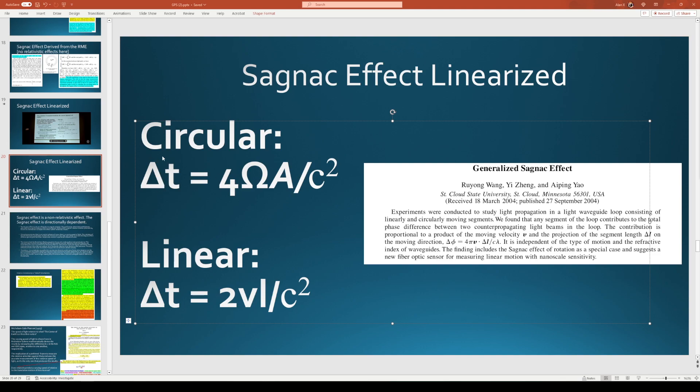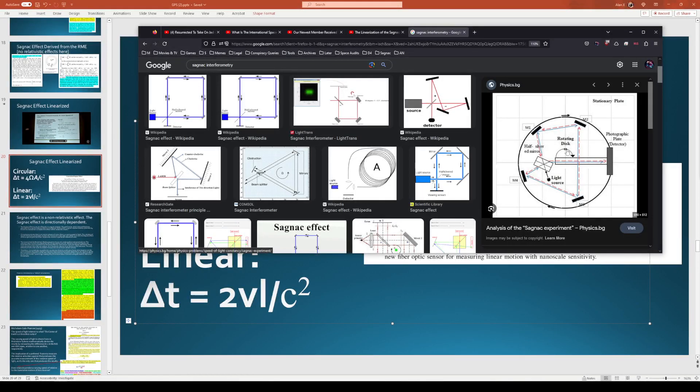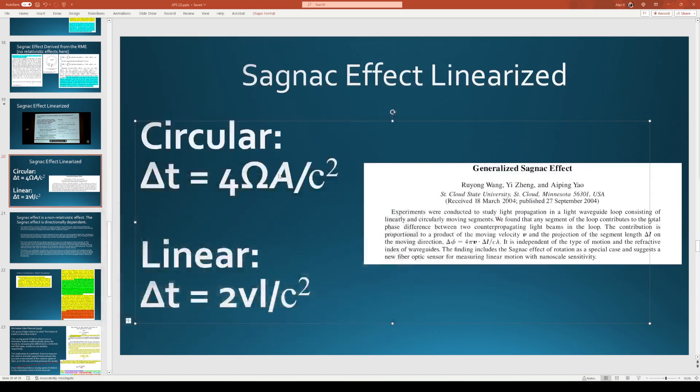What they do here is your delta T is going to be your time interval, which is basically saying the fringe shift produced by this circular rotation is equal to four times the rotation of the device. Omega stands for angular rotation. A stands for the area of the device, meaning the length that light has to travel within the device. That's going to be your area.